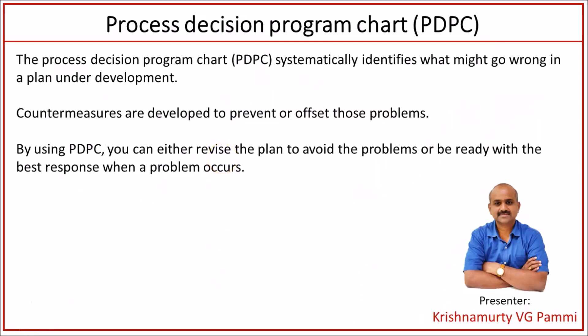Process Decision Program Chart helps identify what might go wrong in a plan under development in a systematic manner and develops countermeasures to prevent or offset the problems identified. By using PDPC, you can either revise the plan to avoid the problems or be ready with the best response when a problem occurs. On mission critical or large scale projects, PDPC helps identify what might go wrong down the line and come up with relevant and cost-effective counterbalancing actions to prevent these problems. Thank you.